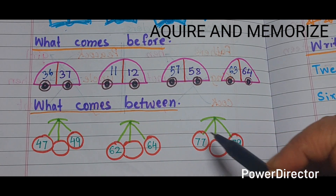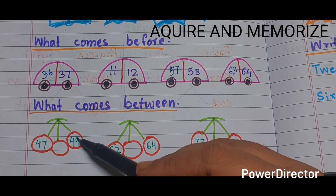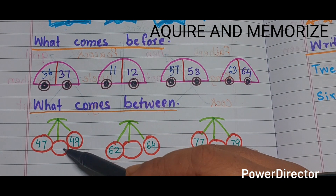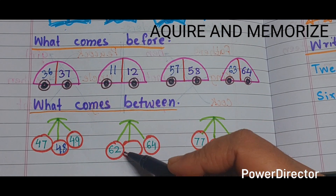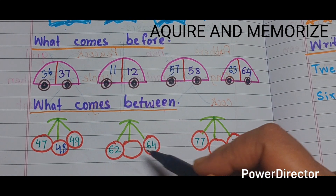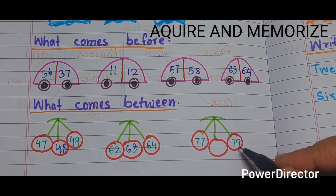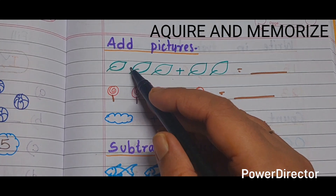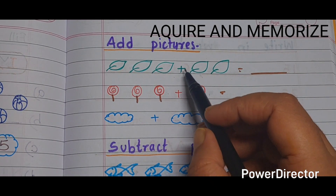Next is 'what comes between'. Some cherries are given and we have to write the middle cherry — the between number of the two given numbers. 47 and 49 — the between number is 48. 62 and 64 — the between number is 63. 77 and 79 — the between number is 78.